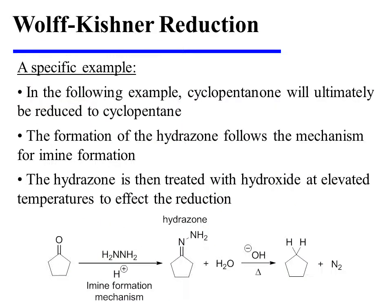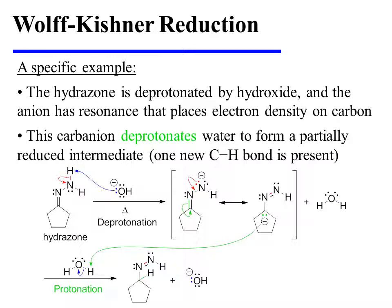Now let's turn our attention to a specific example. In this example, cyclopentanone will ultimately be reduced to cyclopentane. The formation of the hydrazone follows the mechanism for imine formation. The hydrazone is then treated with hydroxide at elevated temperatures to affect the reduction. The hydrazone is deprotonated by hydroxide, and the anion that results has resonance placing electron density on carbon. This carbanion can deprotonate water to yield a partially reduced intermediate in which one new C-H bond is present.